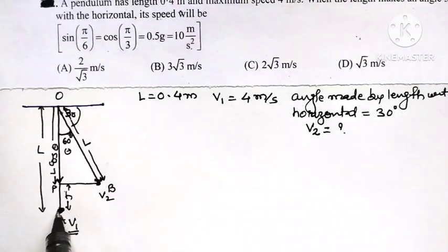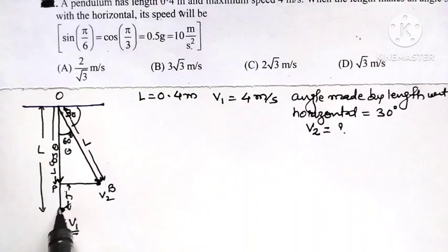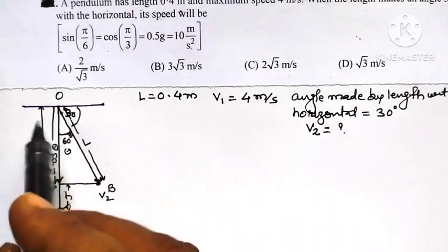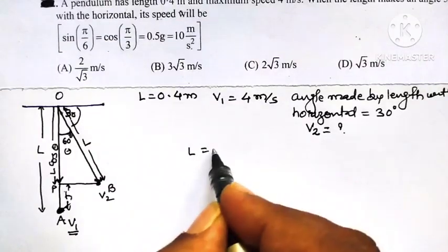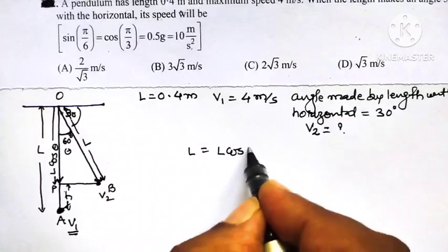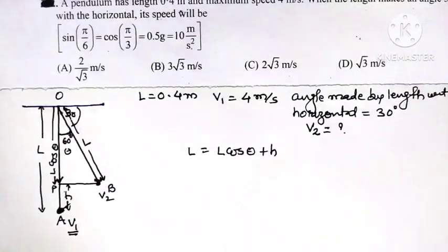When the pendulum reaches height h, this is the original position at mean position. When pendulum is at height h from the original position, the original position is equal to L cos theta plus the height to which that pendulum rises.